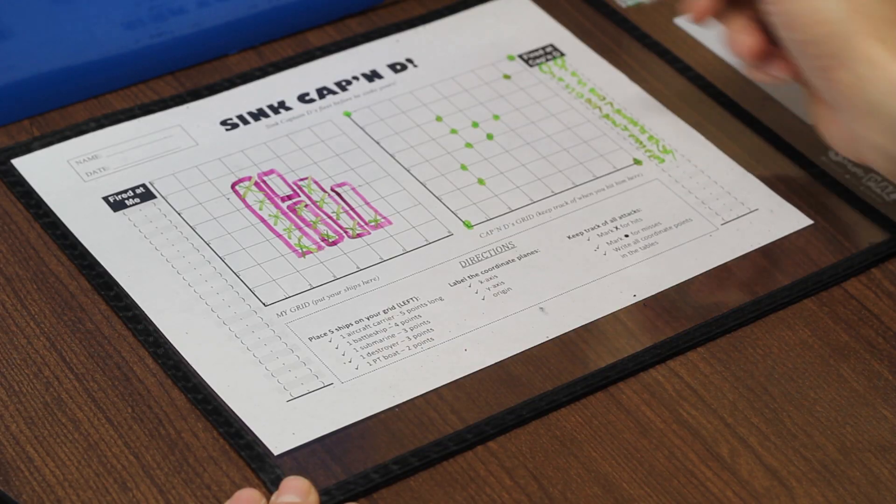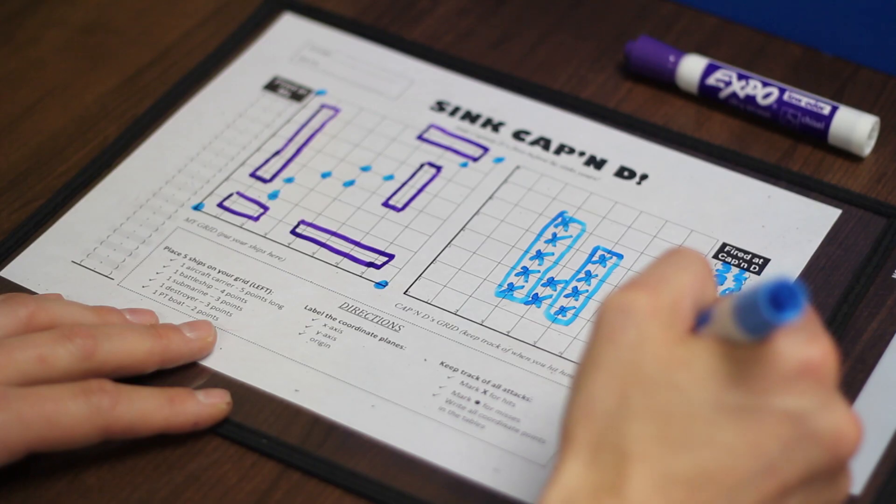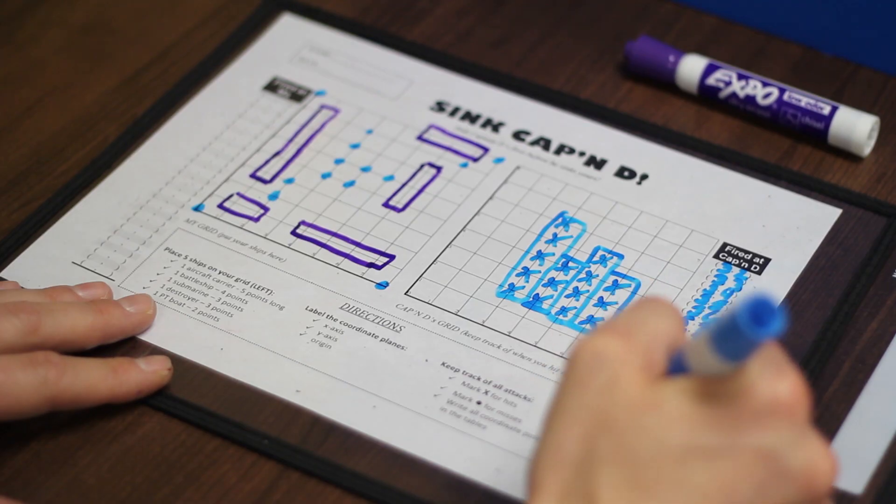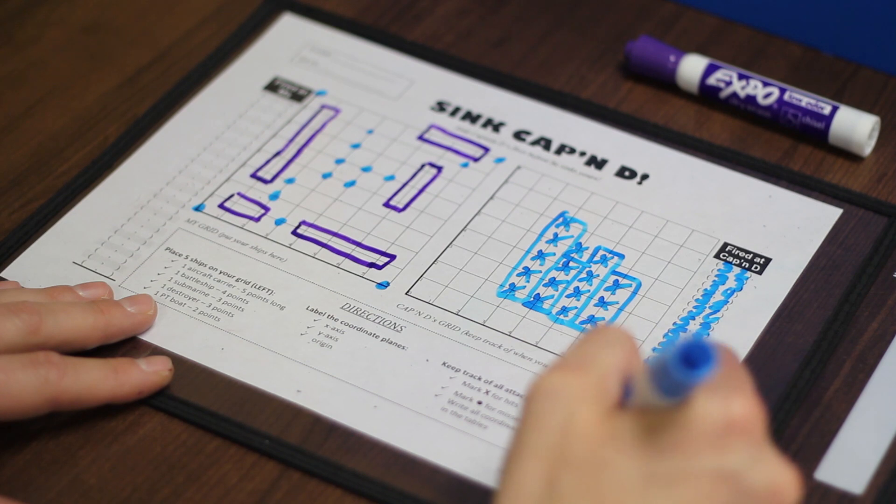Three, seven. Miss. Four, four. Hit. Miss. Hit. Miss. Miss. You sunk my destroyer. Three, three. Miss. Four, five. Hit. Miss. Four, six. You sunk my PT boat.